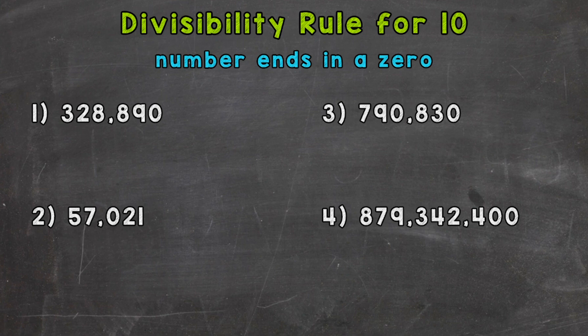Let's go through our examples. For number one, we have 328,890. Does that number end in a zero? Yes, so that number is divisible by 10.